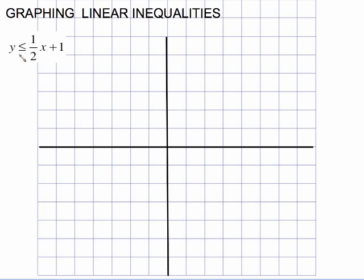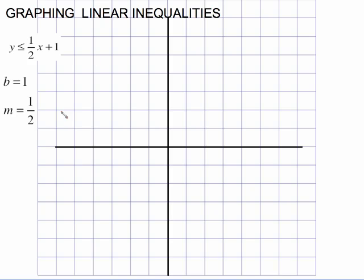So pretend for a second instead of the saying y less than or equal to, just pretend you have y equals. This is in slope-intercept form. All you need to be able to graph the line is the slope and the y-intercept. The y-intercept is this value back here and the slope is right here. From there I can graph the line.